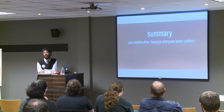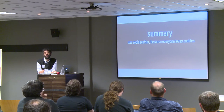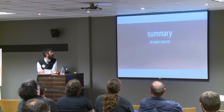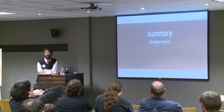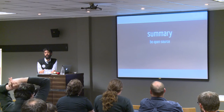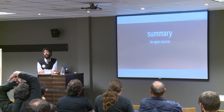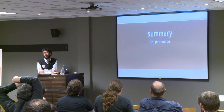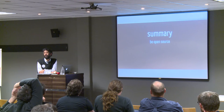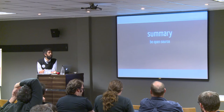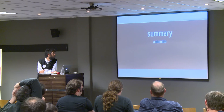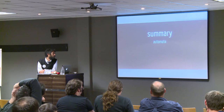The three things I want to leave you with: use CookieCutter, because cookies. Be open source — find an open source project that you depend on, of medium size so you can have some impact. Triage some issues, review some other people's code, and do it. Number three is automate all the things.